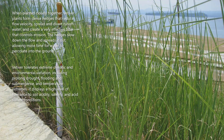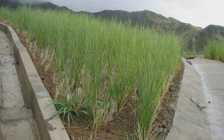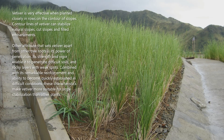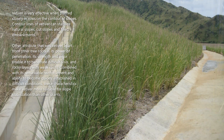Vetiver displays a high level of tolerance to soil acidity, salinity, and acid sulfate conditions. It is very effective when planted closely in rows on the contour of slopes. Contour lines of vetiver can stabilize natural slopes, cut slopes, and filled embankments.